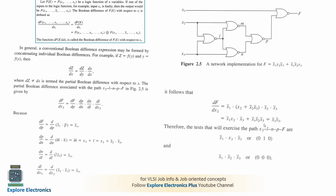The final expression gives the test set to exercise the path. One set is x1-bar · x2 · x3-bar, and another is x1-bar · x2-bar · x3-bar. This is how we find the test pattern for the given path using partial Boolean difference.